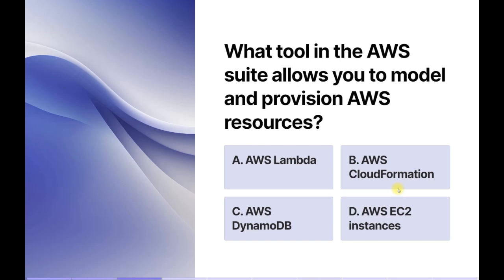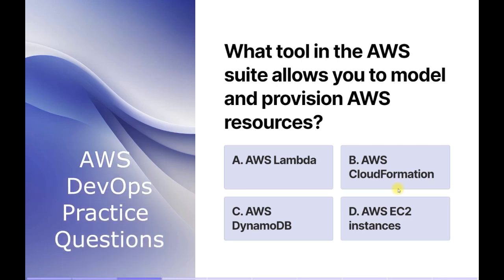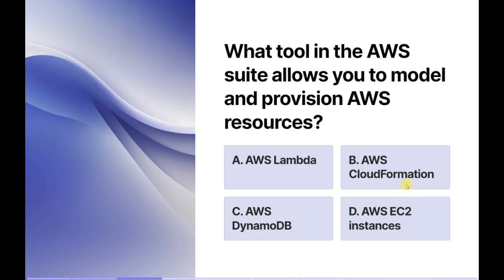In this question they are asking: what tool in AWS allows you to model and provision AWS resources? The options are: AWS Lambda, AWS CloudFormation, AWS DynamoDB, and AWS EC2 instances. AWS Lambda is a serverless compute service that allows us to run code without provisioning or managing servers. AWS CloudFormation is a tool that allows us to model and provision AWS resources — it is an IaC (Infrastructure as Code) service.